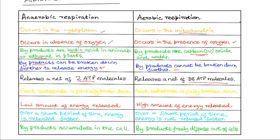The reason for this difference is that the products of anaerobic respiration still contain chemical bonds that carry energy, while in aerobic respiration these products have been completely broken down with very few chemical bonds remaining. In anaerobic respiration, the food substrate is partially broken down, while in aerobic respiration it is completely broken down.